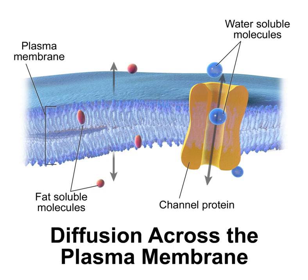Fatty acids may be saturated or unsaturated. The length and degree of unsaturation of fatty acid chains have a profound effect on membrane fluidity, as unsaturated lipids create a kink, preventing fatty acids from packing together as tightly, thus decreasing the melting temperature of the membrane. The ability of some organisms to regulate fluidity by altering lipid composition is called homeoviscous adaptation. The membrane is held together via non-covalent interactions of hydrophobic tails, but the structure is quite fluid. Under physiological conditions, phospholipid molecules are in the liquid crystalline state and exhibit rapid lateral diffusion along the layer, though exchange between intracellular and extracellular leaflets is very slow.